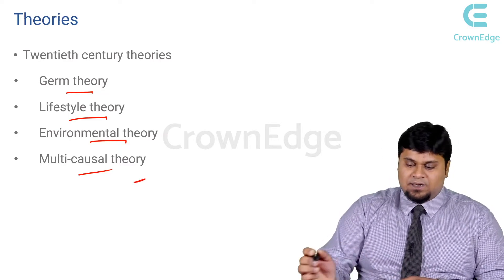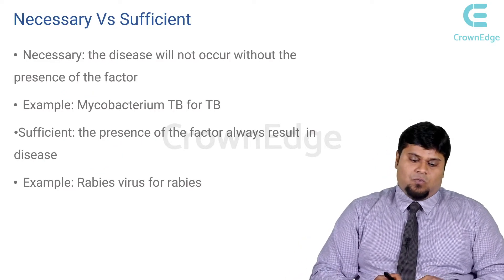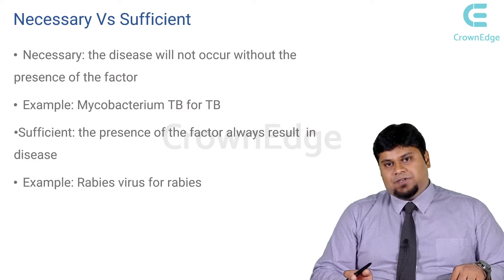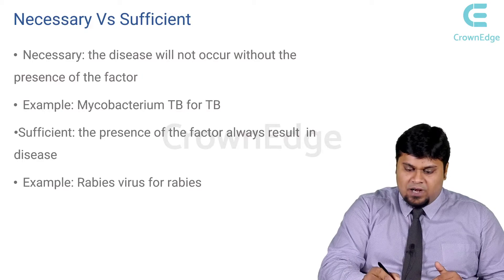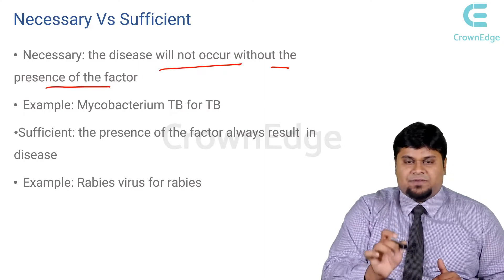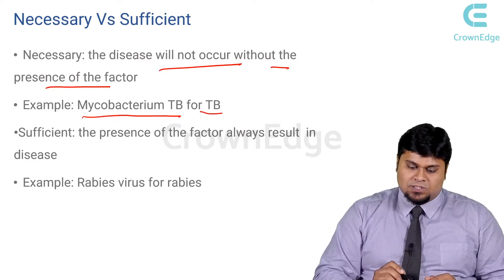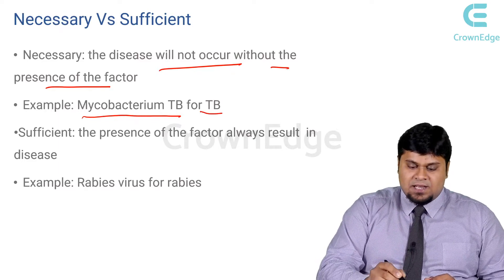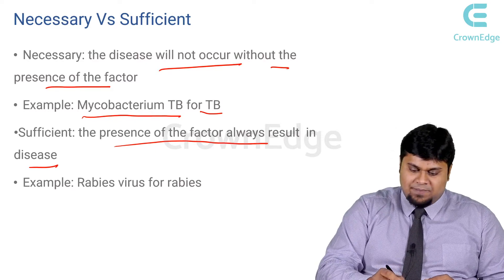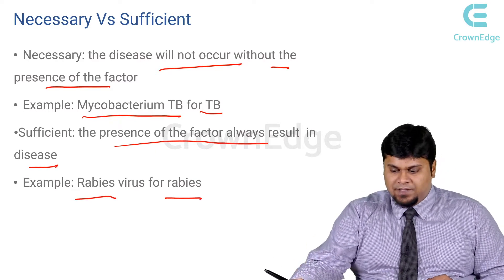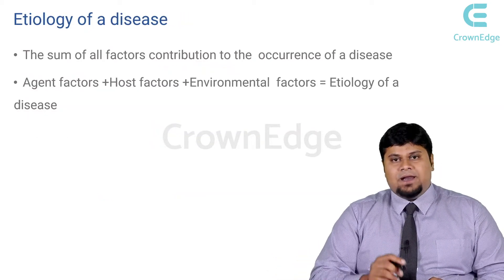This brings us to a proposition of what is necessary and what is sufficient. Necessary means the disease will not occur without the presence of the factor — for example, if there is no Mycobacterium TB, there is no development of tuberculosis. Sufficiency means the presence of the factor will always result in the disease — for example, rabies virus for the development of rabies. So this is a constant interplay between necessary and sufficient.